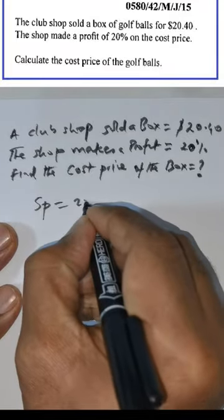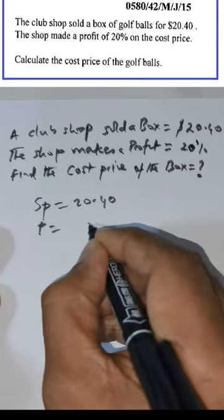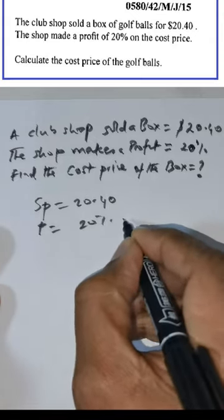Now selling price is $20.40. The profit made is 20%. They are asking us to find the cost price.